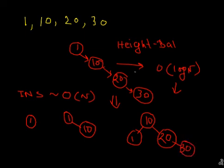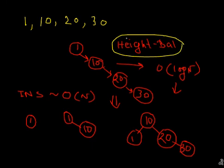For height-balanced trees there are several types. One very famous example is the red-black tree, also called RB trees. These RB trees are used heavily in several libraries — for example, STL libraries in C++ or C#, the sorted dictionary data structure, AVL data structures — all these data structures use RB trees. So they are height-balanced, meaning insertion and deletion complexities are O(log n).